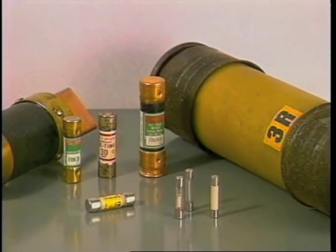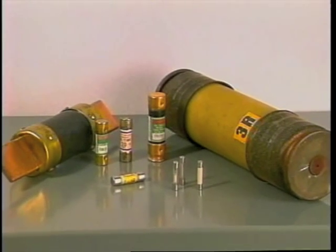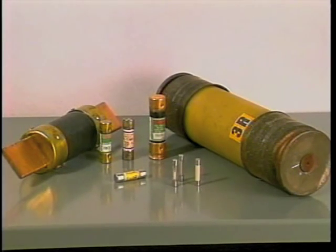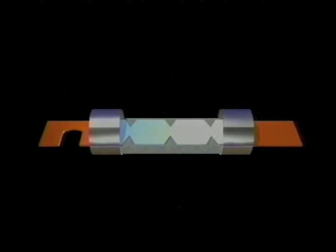One of the more reliable types of overcurrent protective devices is the fuse. The fundamental element of a fuse consists of a fusible link or links enclosed in a tube and connected to contact terminals. The electrical resistance of the link is very low and it acts as a conductor. When current in the circuit exceeds the fuse size, the link melts and opens the circuit to protect the conductors, other circuit components, and equipment.